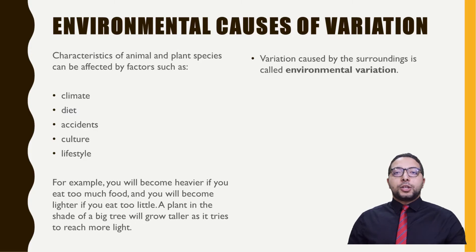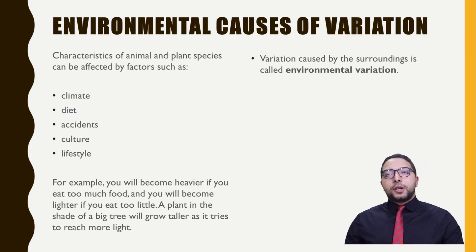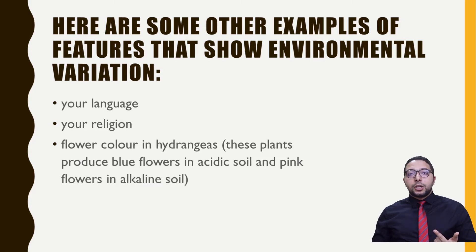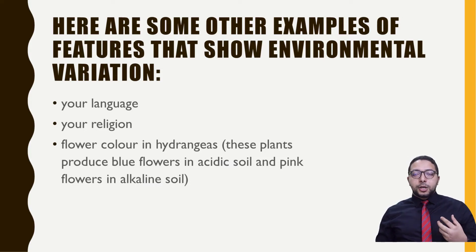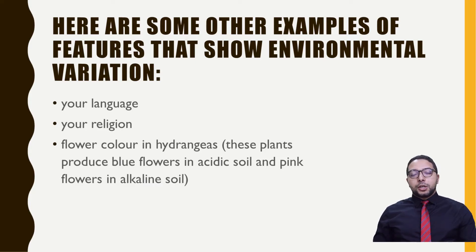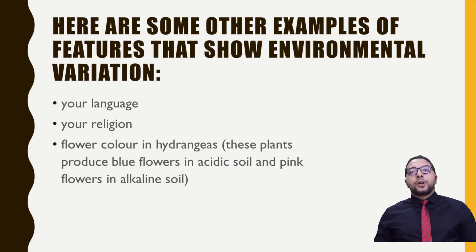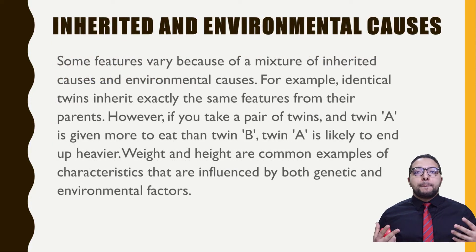Remember, we're still talking about the same species — Homo sapiens. Variation caused by the surroundings is called environmental variation. For example, language, religion, and the color of some flowers: flowers may become blue in acidic soil and pink in alkaline soil, so based on the pH of the soil we might have different colors. That's another example of environmental variation.